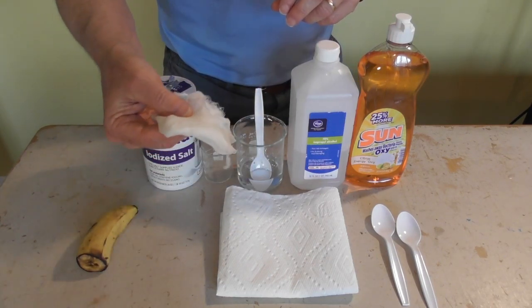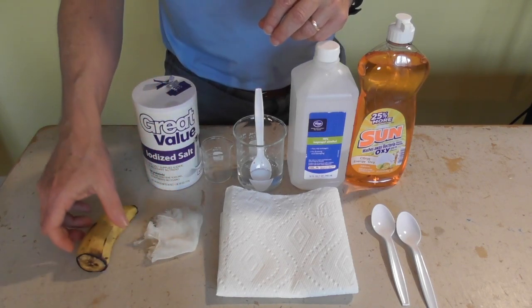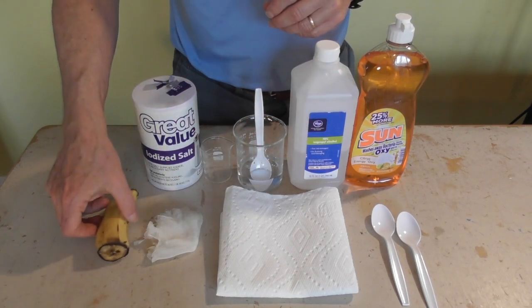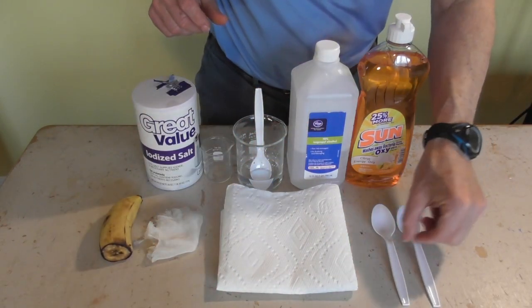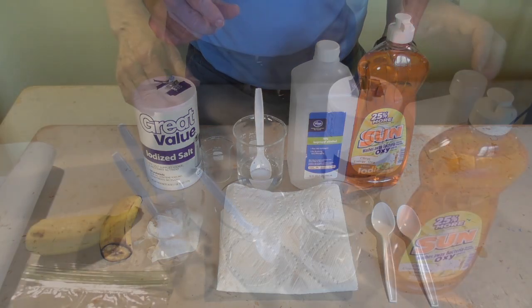some cheesecloth and you can find that in the bakery section of the grocery store. A banana and eventually we will peel it. A couple paper towels and then have some spoons available. So let's get started with step one.